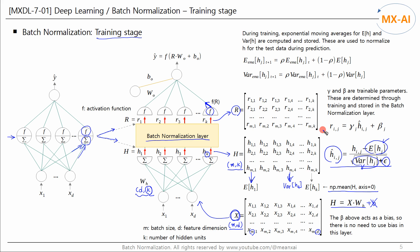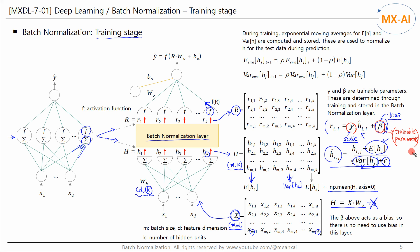Next, let's look at how to find matrix R. Each element of matrix R is computed as: gamma_j times H-hat plus beta_j, where gamma_j is a variable that scales H-hat, and beta_j corresponds to a bias. Since beta provides the bias in the batch normalization layer, we do not need to use a separate bias term before it. Gamma and beta are trainable parameters determined through training, with initial values of gamma set to 1 and beta set to 0, updated using gradient descent during error backpropagation.